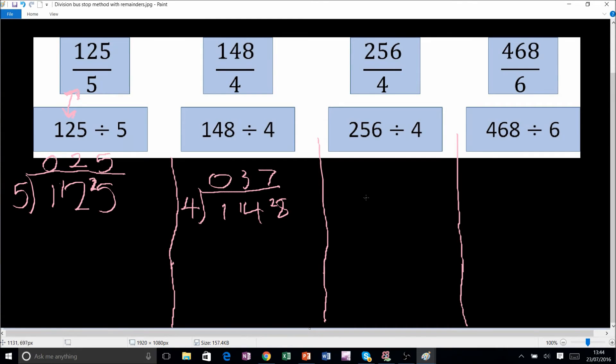Now let's go on to the next one. We've got 4 and we've got 256. How many fours go into two? Well, zero, remainder two. So that now becomes 25. How many fours go into 25? Let's find out: 4, 8, 12, 16, 20, 24. So we've got six, remainder one. Now how many fours go into 16? Well, four, remainder zero. And that's it. 256 divided by 4 gives us 64.